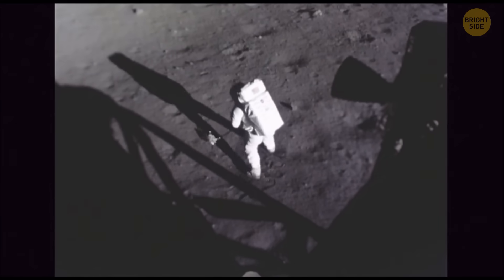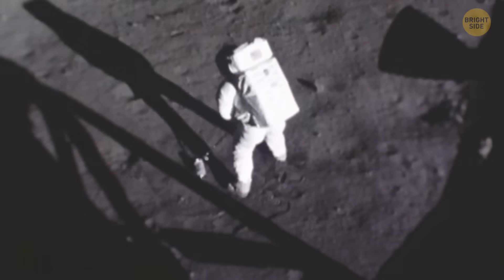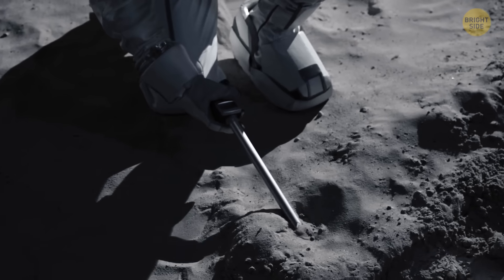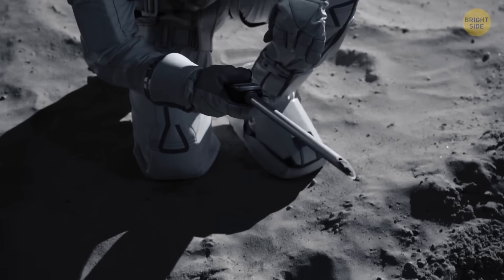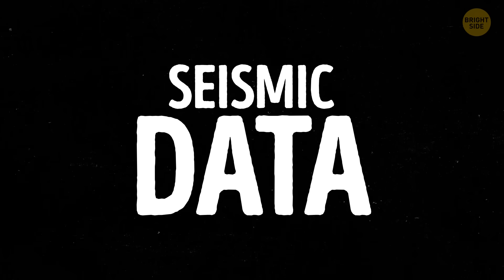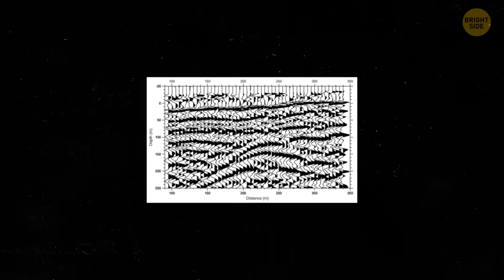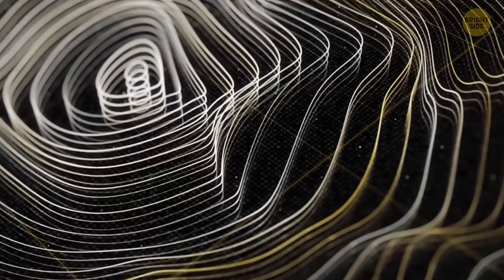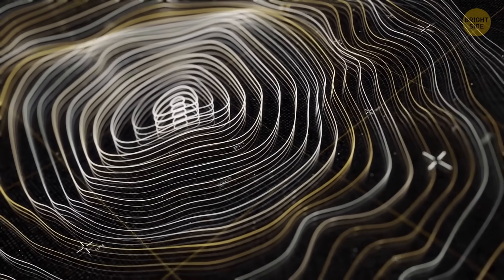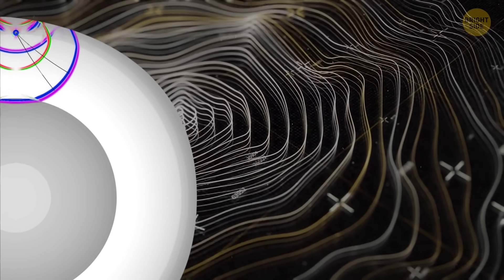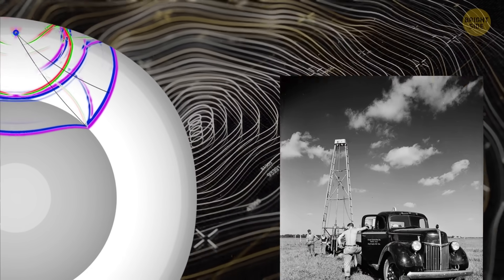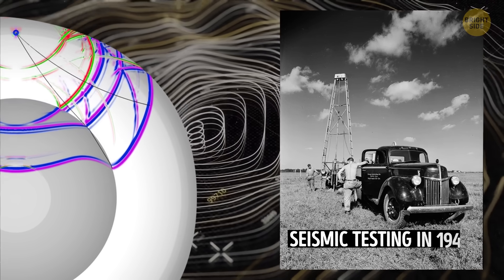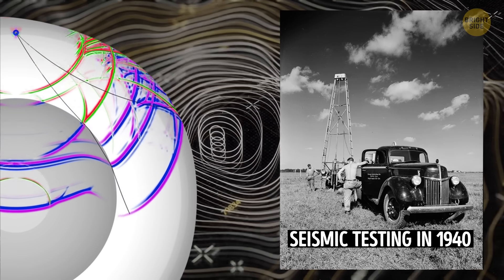Astronomers have collected data from different missions, including the Apollo missions, where astronauts went to the moon and gathered information themselves. Plus, they've used a special technique called seismic data. This method is all about studying how sound waves move through things. Take earthquakes on our planet as an example. When an earthquake happens, it creates waves that travel through the ground. Scientists can detect and analyze these waves to learn more about Earth's interior.